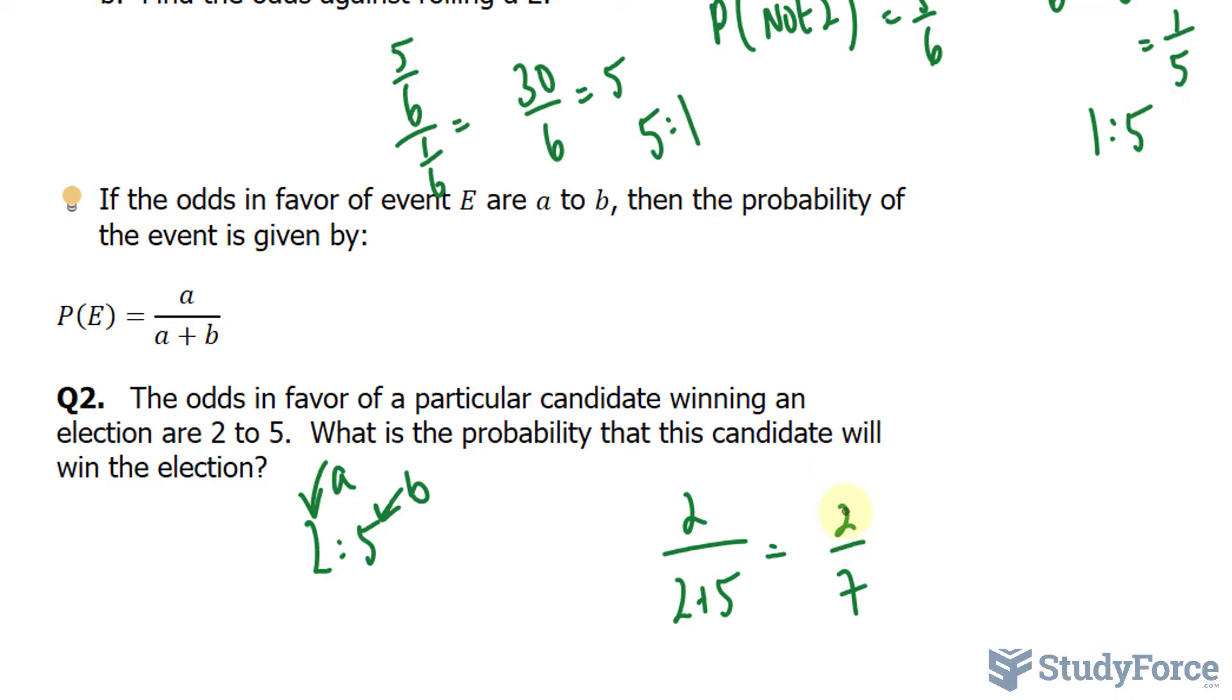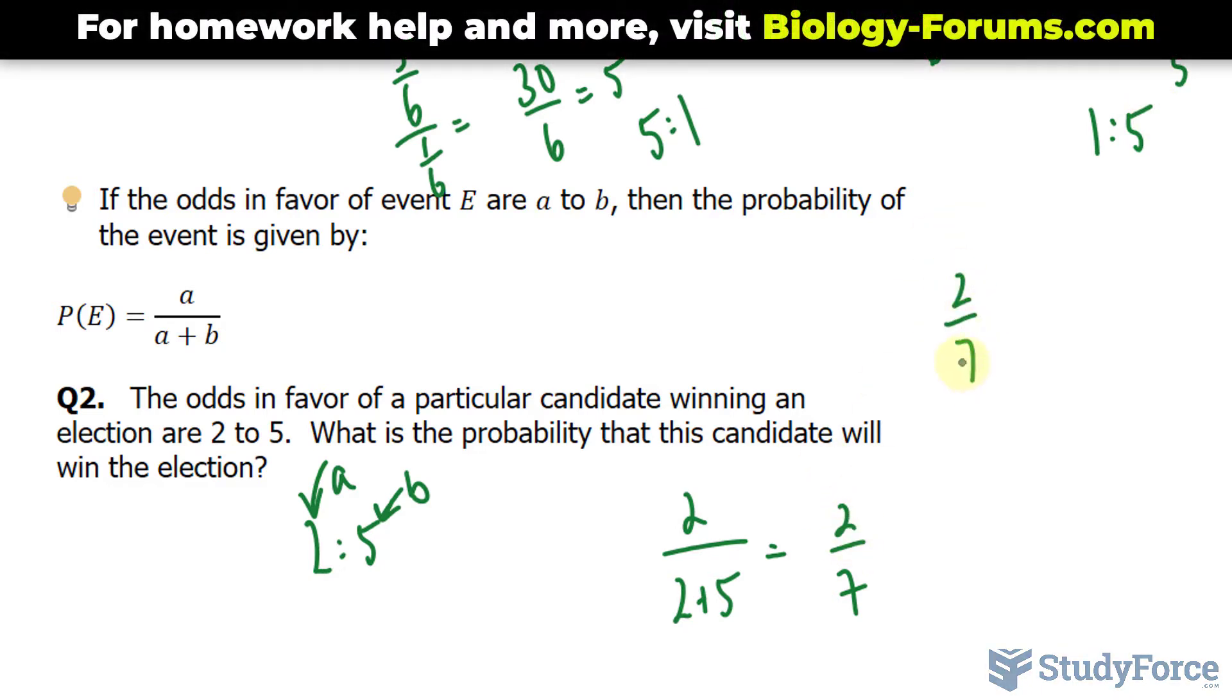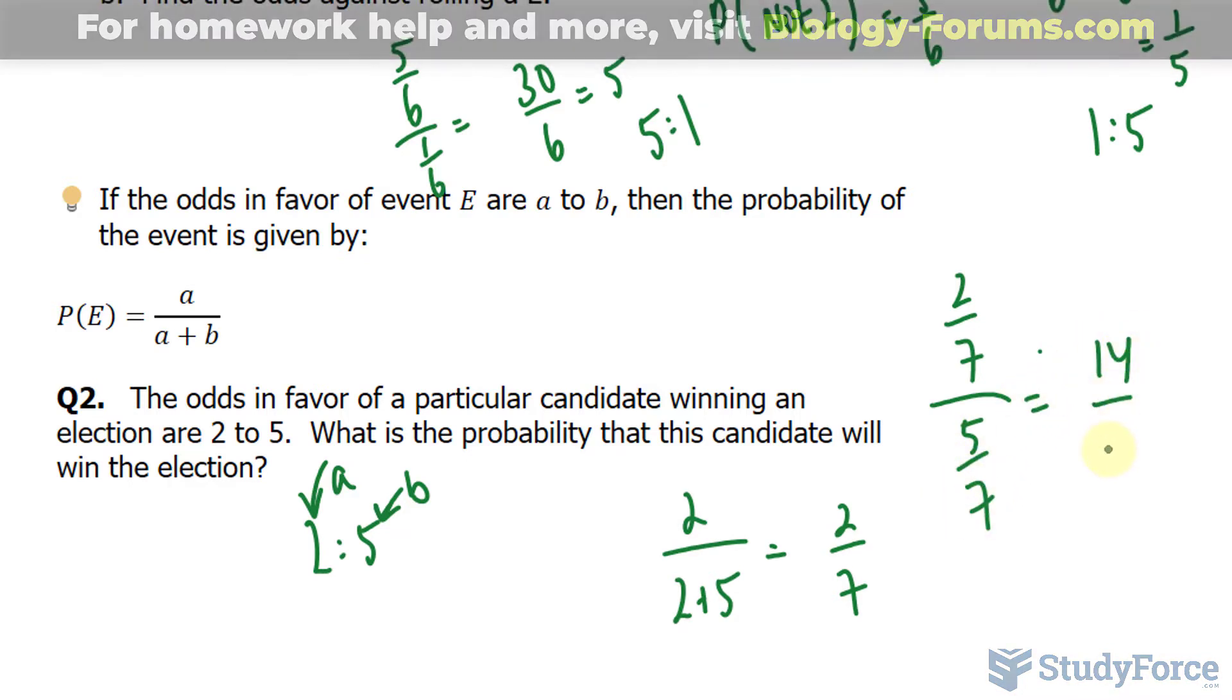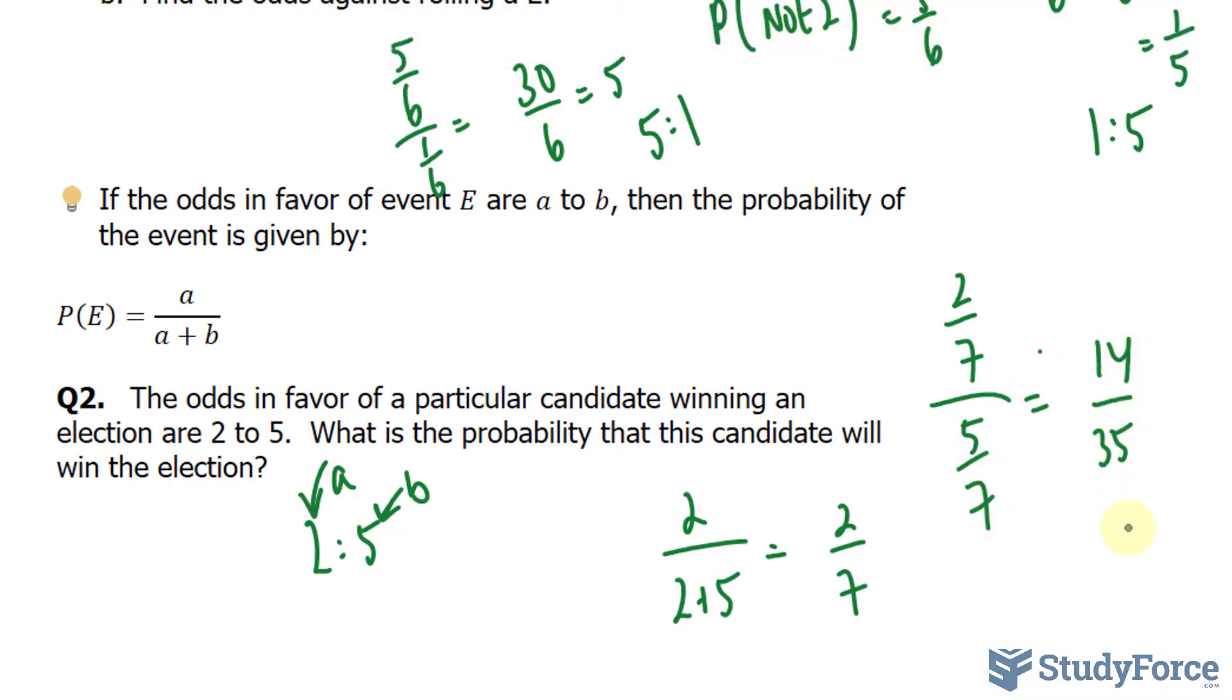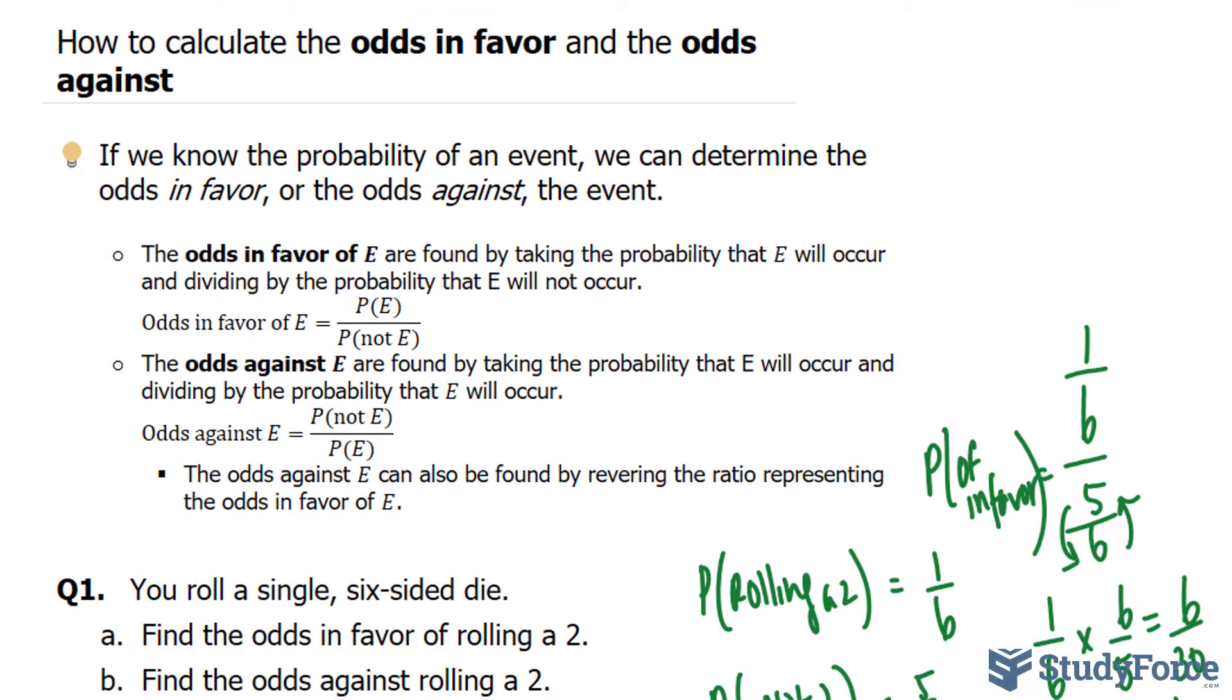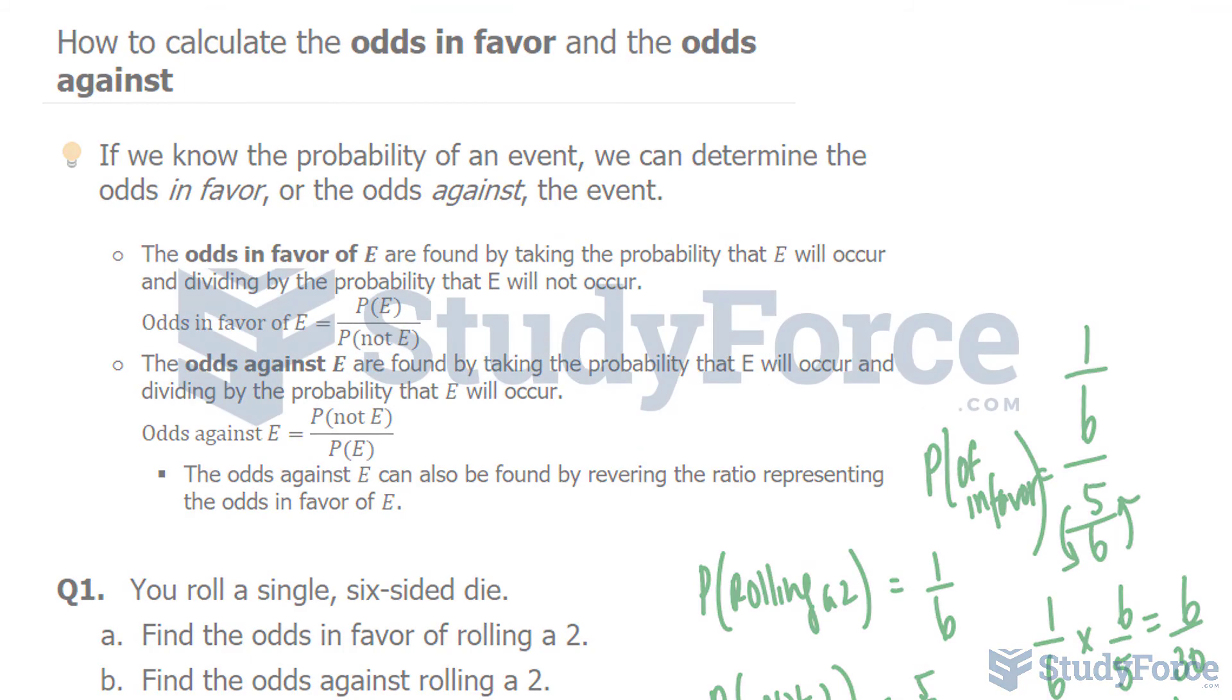For example, if I took 2 over 7 and divided it by the probability of not winning, which is 5 over 7, we would end up with 14 over 35. 14 over 35 is 2 over 5. And there you have it. That is how to calculate the odds in favor and the odds against.